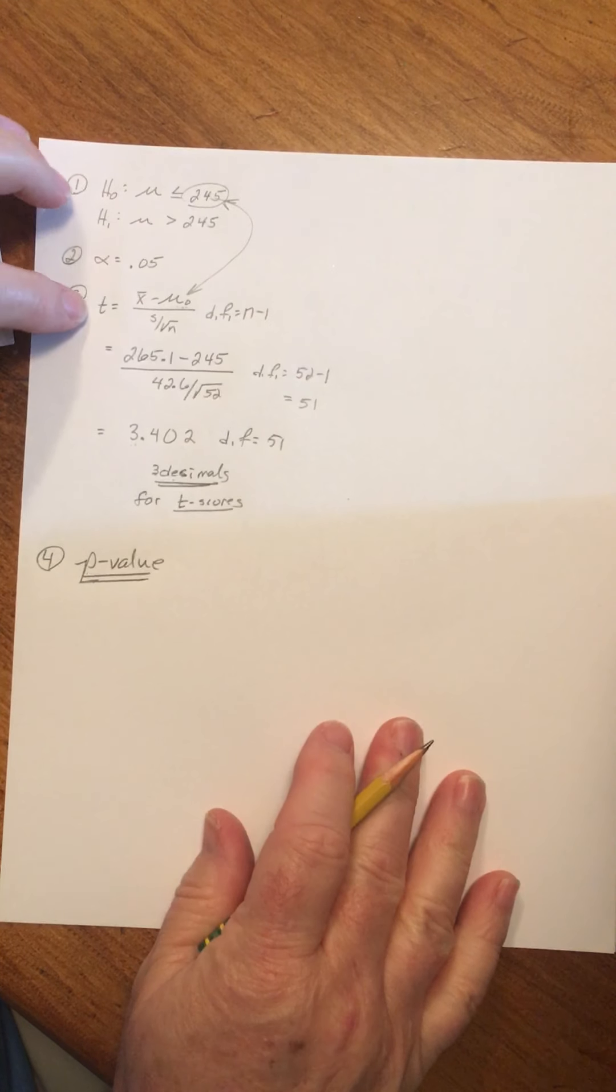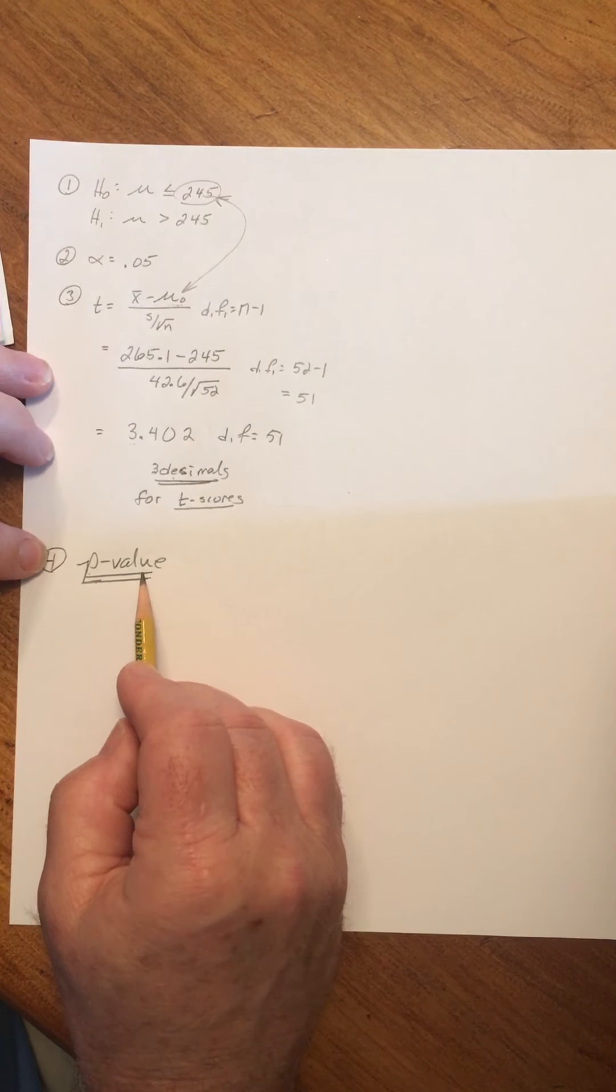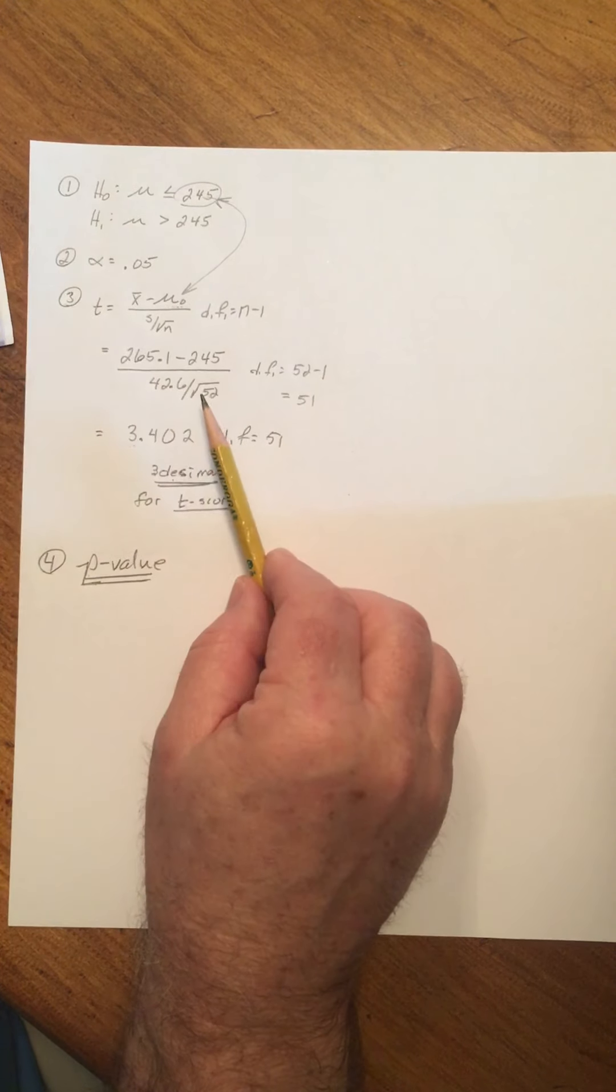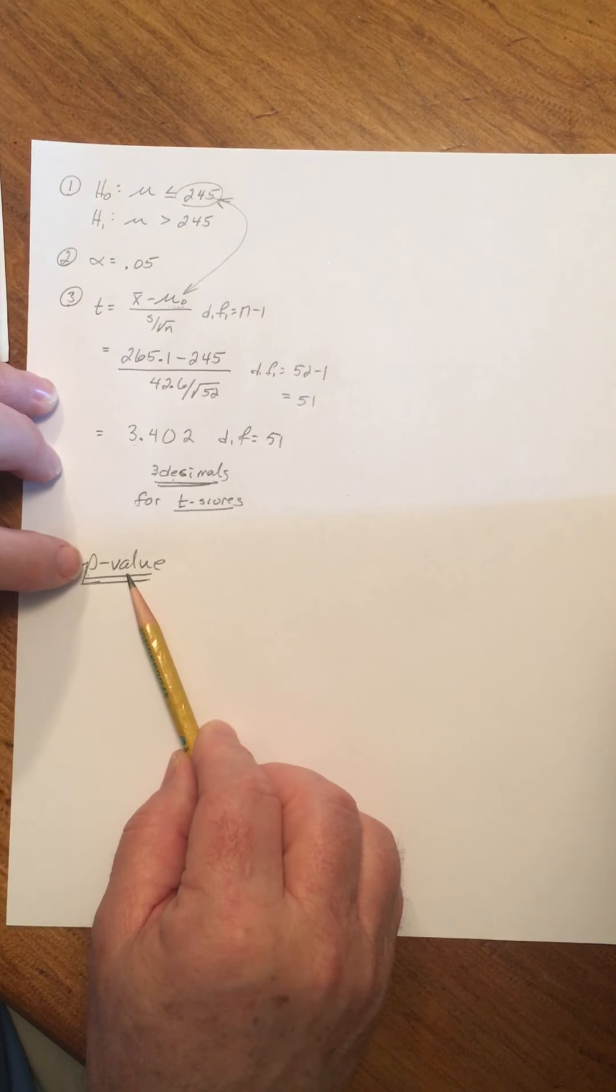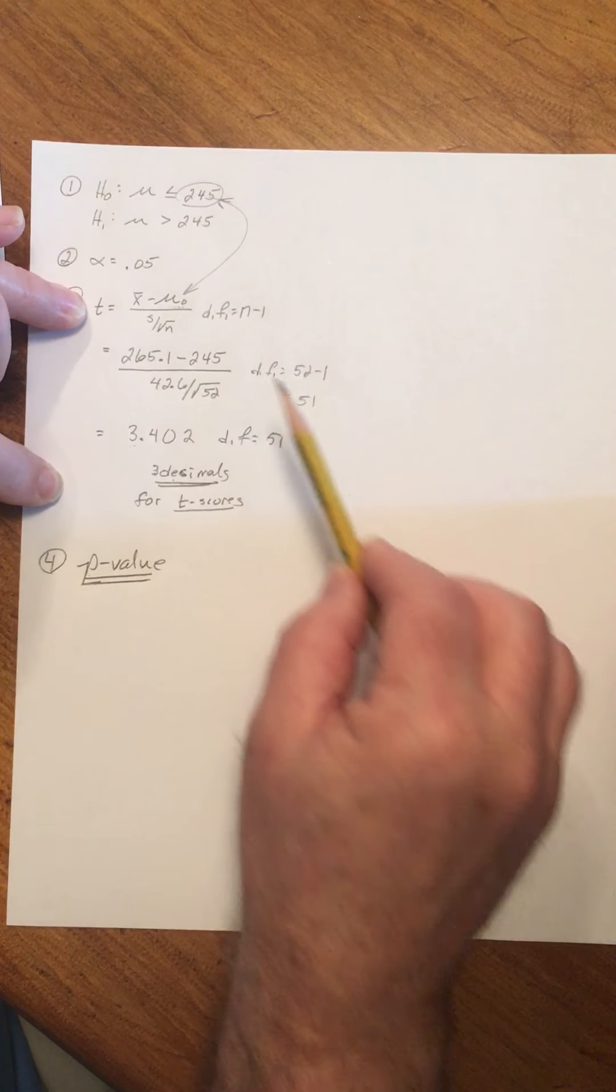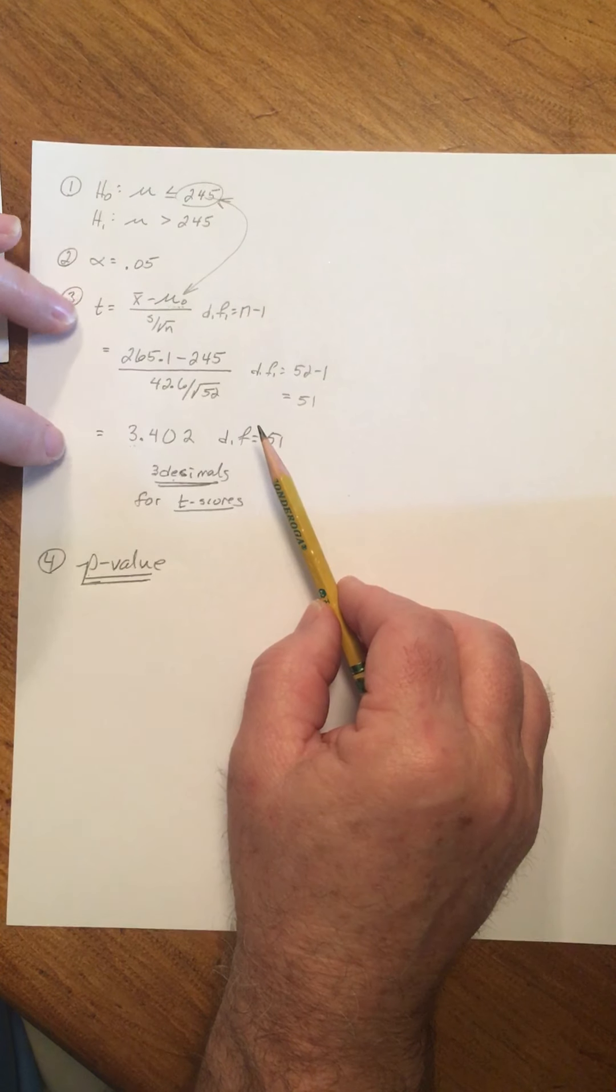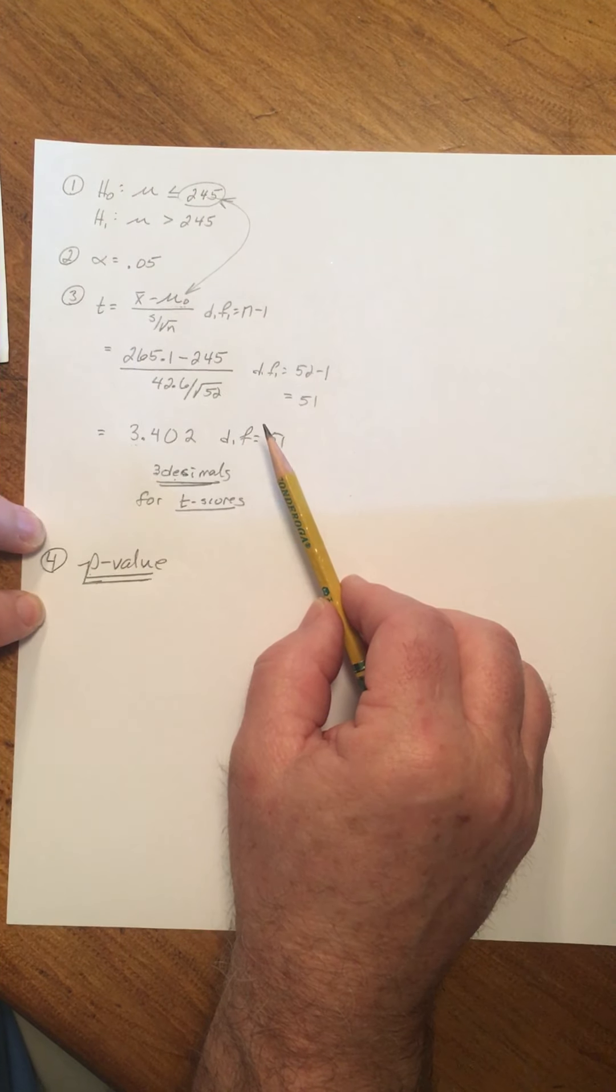Now, the p-value, whenever we have the t-score, the procedure for finding the p-value is one way using the t-scores. And it's a different procedure to find the p-value if we have z, Zulu, for the test statistic.